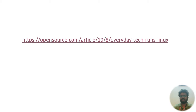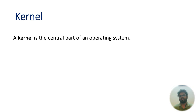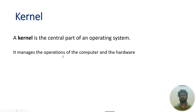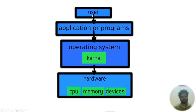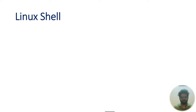Now let's understand the core part of Linux. The kernel is the central part of an operating system, just as the operating system is the central part of a computer. The kernel manages the operations of the computer and its hardware — managing CPUs, memory, and devices. The kernel is the soul of the operating system, and the operating system is the soul of the computer.